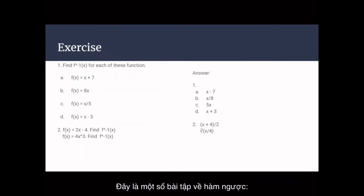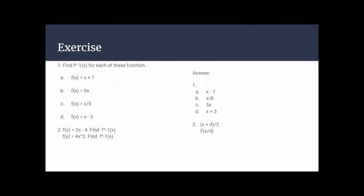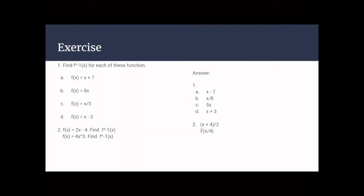Here are some exercises about inverse functions. Question 1: find the inverse function for each of these functions. a) f(x) equals x plus 7, b) f(x) equals 8x, c) f(x) equals x divided by 5, and d) f(x) equals x minus 3. The answers: a) inverse is x minus 7, b) x divided by 8, c) 5 multiplied by x, and d) x plus 3.